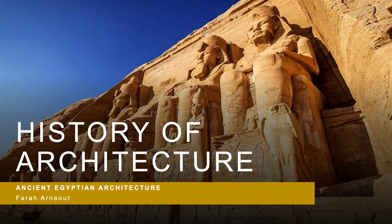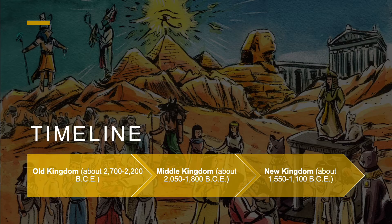Welcome to Framed Architecture. This is the second episode of the series titled 'The History of Architecture.' Today we are going to explore ancient Egypt. Researchers consider ancient Egypt to be made up of three main kingdoms: the Old Kingdom, which started about 2700 BCE to 2200 BCE; the Middle Kingdom, which started around 2050 to 1800 BCE; and the New Kingdom, which lasted from 1550 to 1100 BCE. In this video we are going to explore different architectural monuments from each kingdom.